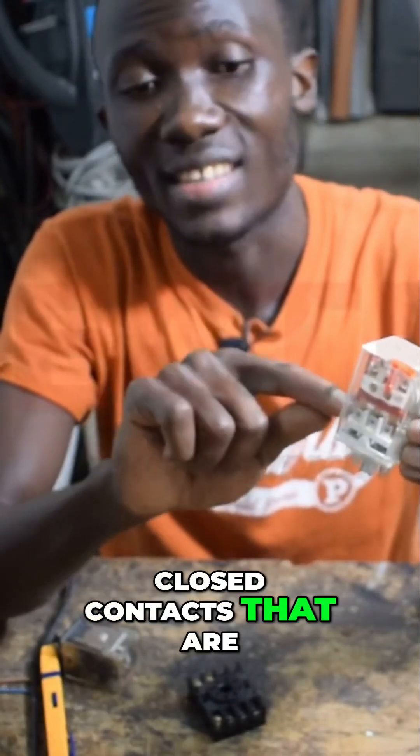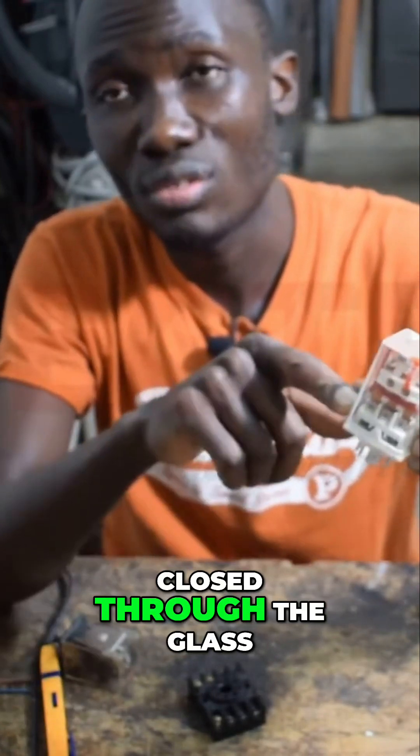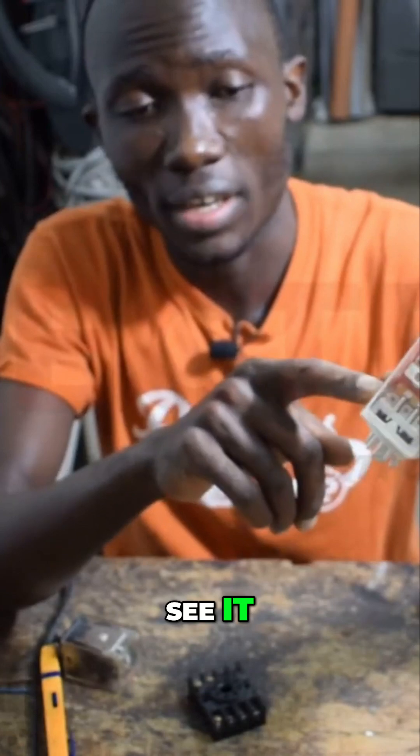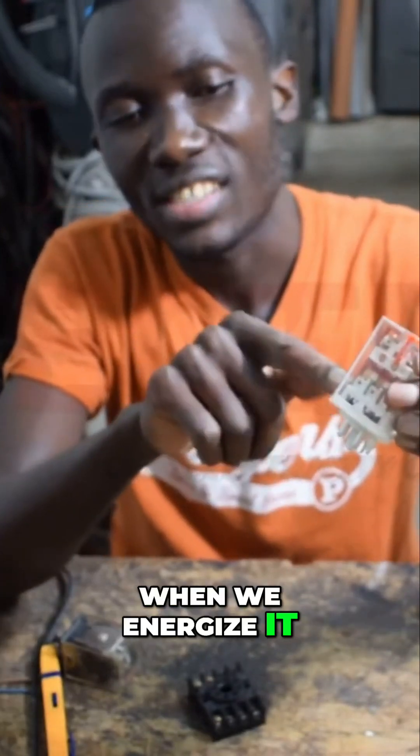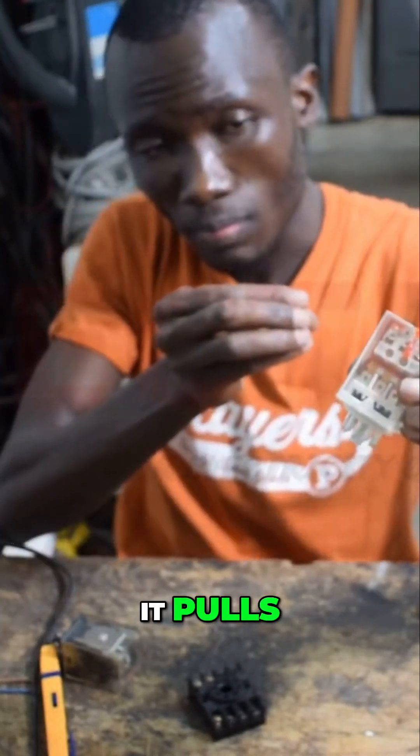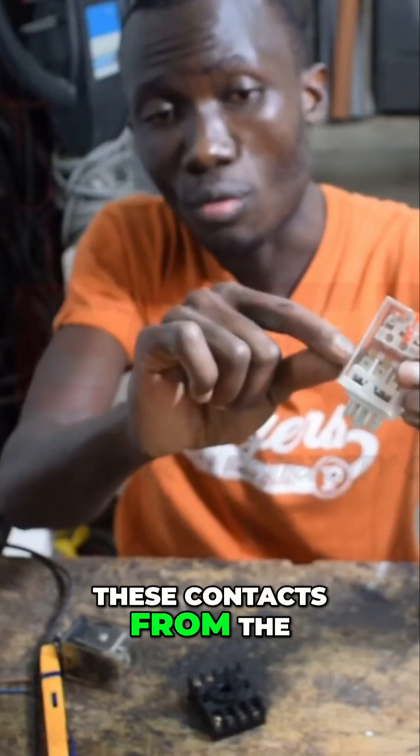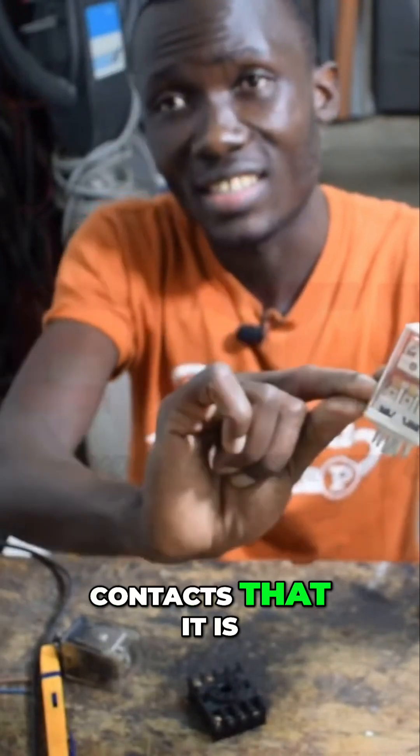We have normal closed contacts that are closed through the glass, you are able to see it. Now when we energize it, it pulls these contacts from the contacts that it is closed to.